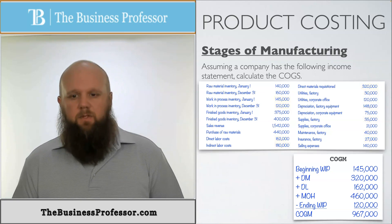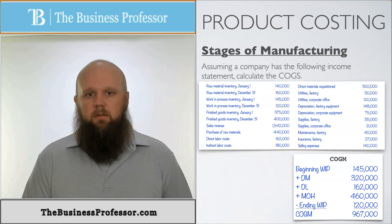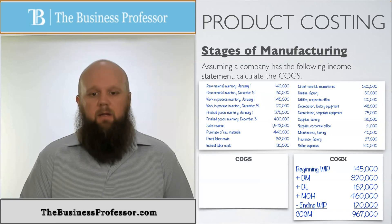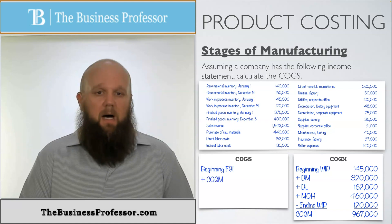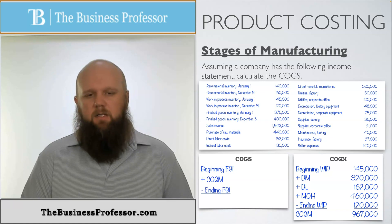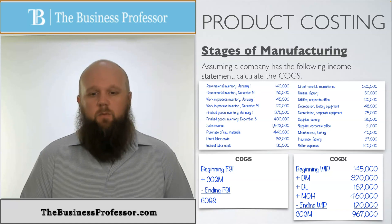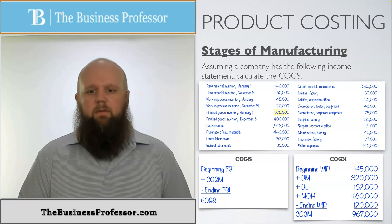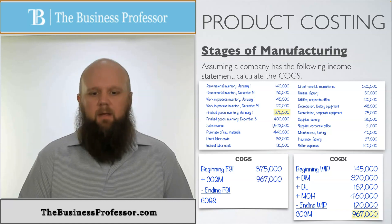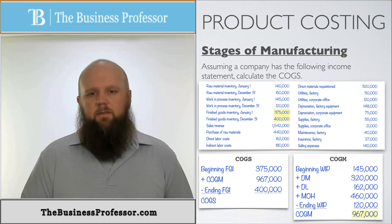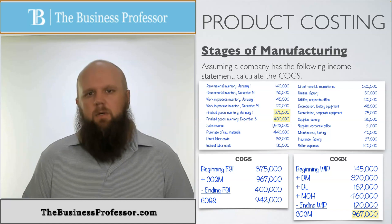Now, what if they ask us to calculate cost of goods sold? We use the equation: beginning finished goods plus cost of goods manufactured minus ending finished goods. Beginning finished goods is $375,000 as of January 1st. Cost of goods manufactured is $967,000 — just calculated. Ending finished goods is $400,000 as of December 31st. Doing the calculations, cost of goods sold equals $942,000 — the amount of cost that moved from finished goods inventory into the cost of goods sold account.